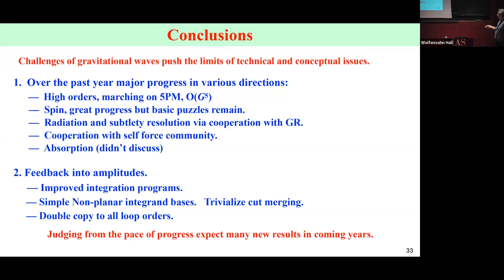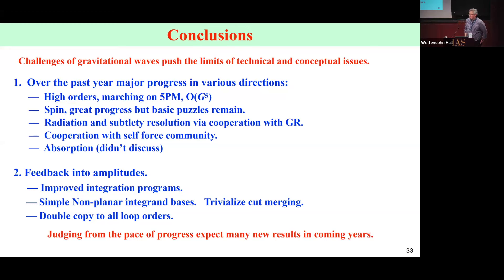In conclusions: the problem of gravitational waves really pushes the limits of technical and conceptual issues in amplitudes. Over the past year, we've seen major progress in various directions — high orders, spin, radiation. I really like the subtlety resolution by cooperating with people in the gravitational wave community. There's more cooperation using self-force information to improve post-Minkowskian perturbation theory. There's also absorption by black holes, which I didn't have time to discuss. And finally, this is feeding back into amplitudes: improved integration programs, a simple non-planar integrand basis that trivializes the cut merging, and the double copy to all loop orders. Judging from the pace of progress and many eager young people, we can expect many more results in the coming years. Thank you.